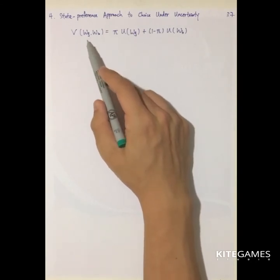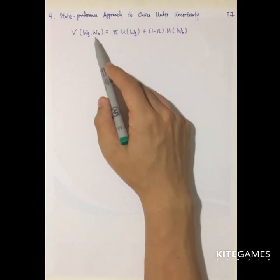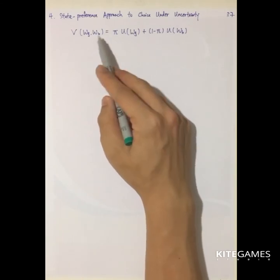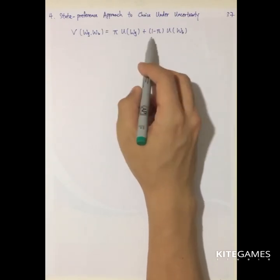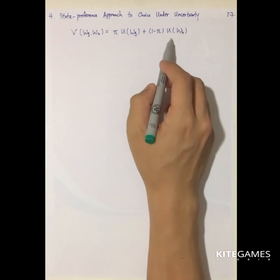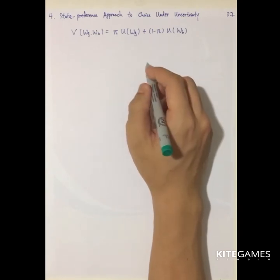So here, we are going to maximize the utility as a function of WG. WG is the wealth in good time. So if it is a good financial return, the wealth. So WB is the wealth at the bad time. So this is equal to the pi, probability of having the good time, plus 1 minus pi, the utility of the wealth at bad time.